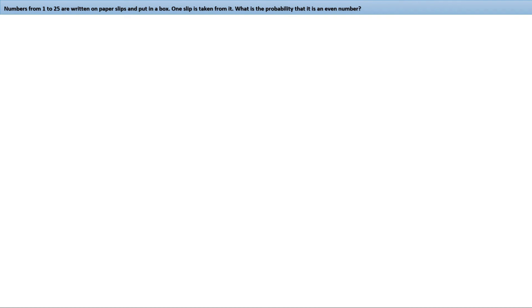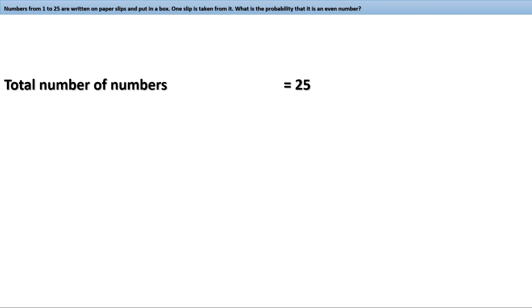Let us find the total number of numbers first. Starting from 1 to 25, there are 25 numbers. Therefore, the total number of numbers is 25. From 1 to 25, how many even numbers are there? Let us consider from 1 to 24 — half of them are even and half are odd. That means out of the first 24 numbers, 12 are even and 12 are odd.